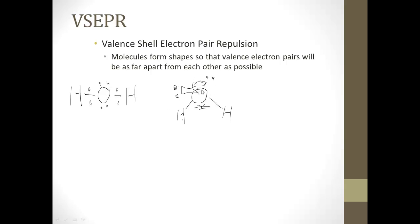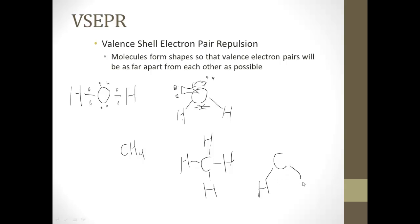These electron pairs are a little further apart because of repulsion, and these bonding pairs are a little closer together due to the positively charged nuclei of the hydrogens — but we'll call them about 109 degrees apart, as opposed to 90. Another common example is methane, CH4, which takes the same kind of shape — four hydrogens arranged around the carbon, all about 109 degrees apart instead of the 90 shown on paper.